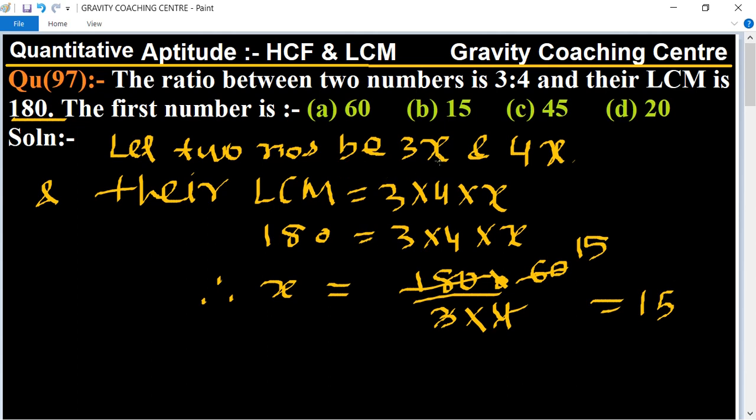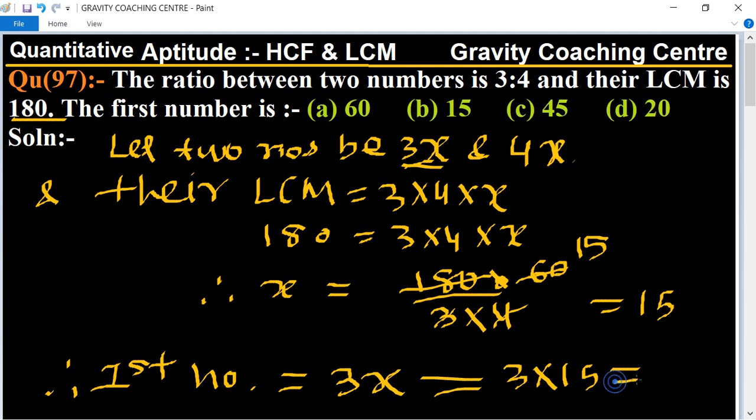So find the first number, first number is 3x equal to 3 into 15 so 15 threes of 45 which is the required answer so option C is the right answer.